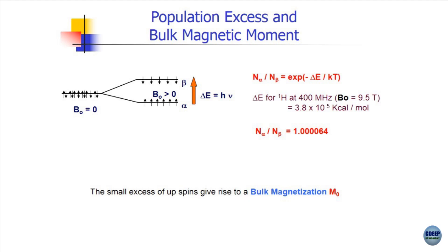If you go up to the second decimal place, it reads 1.00 — you actually have to go to many decimal places to see there is a difference in populations of the lower and upper level. The difference in population is not very much, but there is a difference nevertheless. When we say net difference in population, we are saying that we have a number of nuclei with up spins.